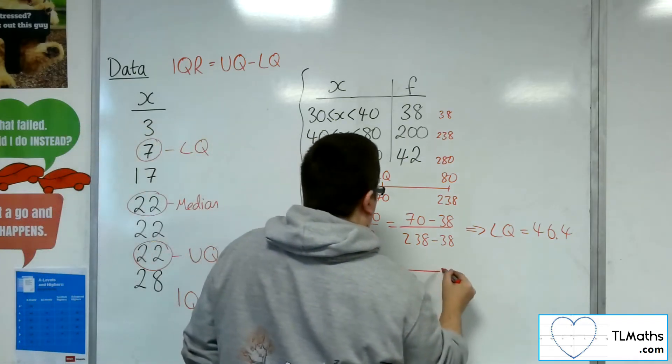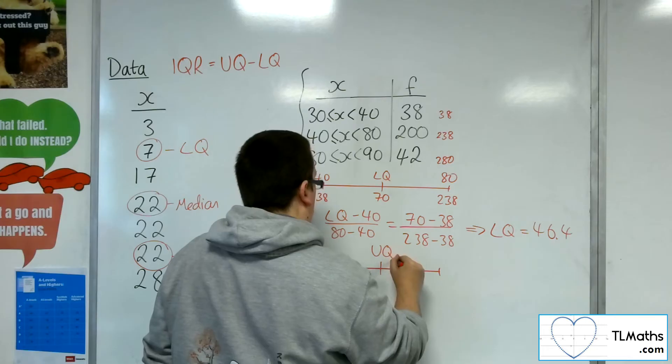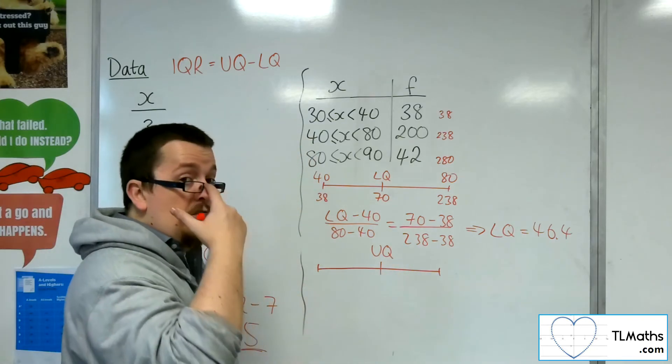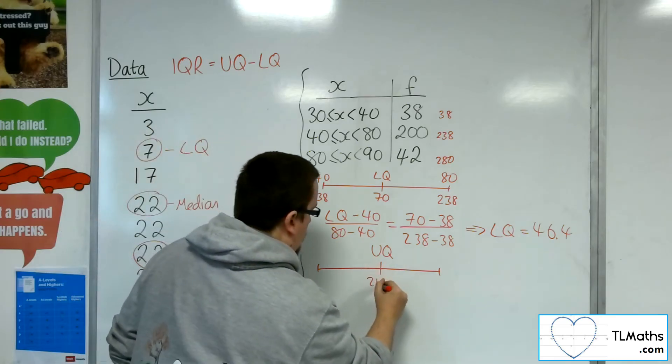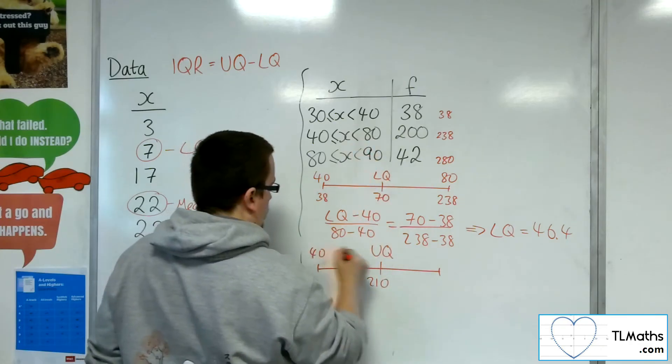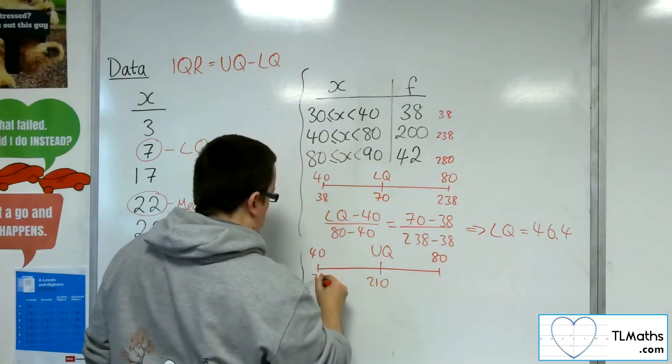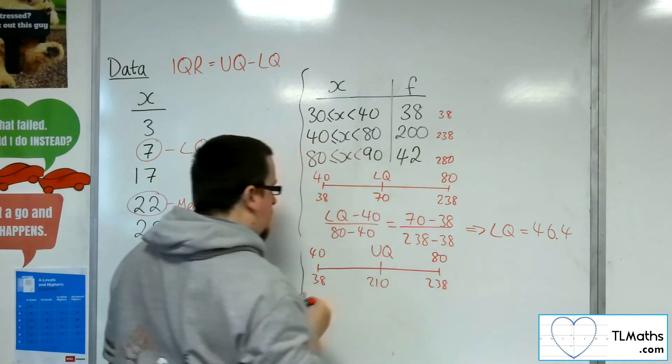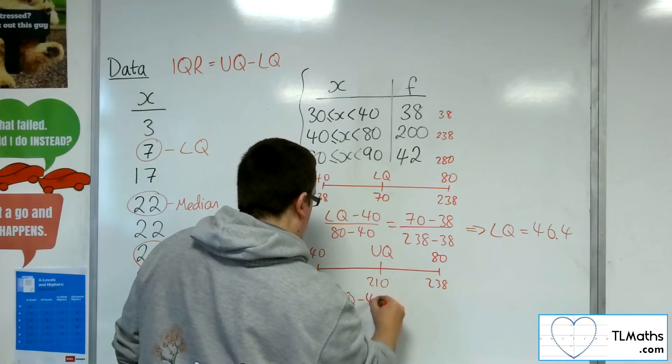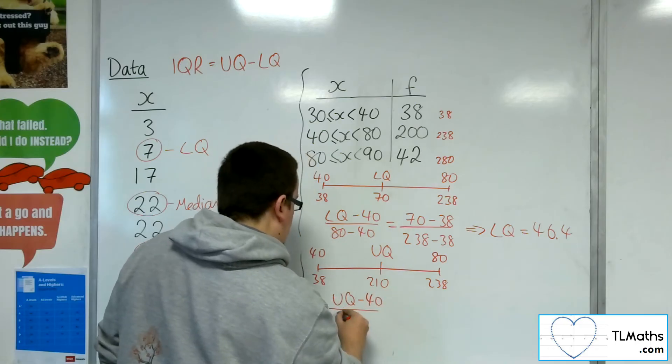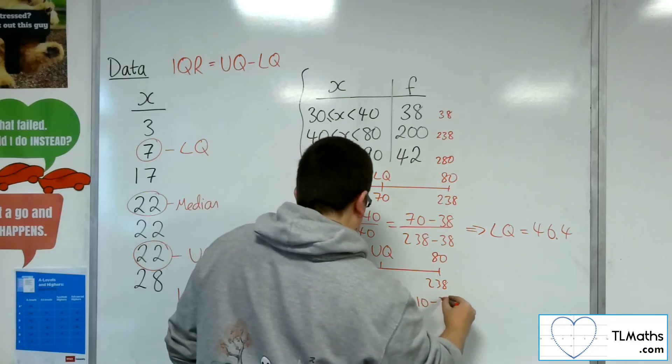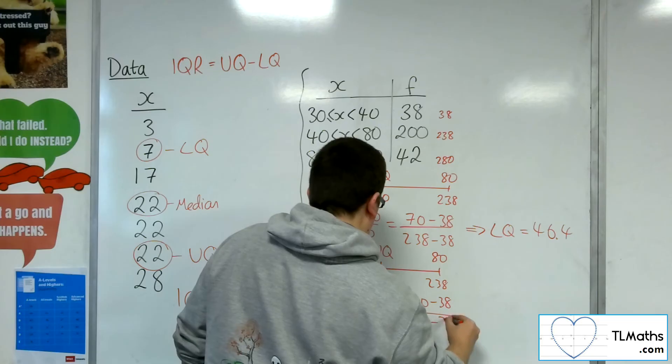Now, the upper quartile, we're going to have to use interpolation again. So there were 280 bits of data, so 3 quarters of that is 210. So it's the 210th position. So that is also in that grouping. So we've gone through 38 and 238 bits of data. So the upper quartile, take away 40, divided by 80 take away 40, is equal to 210 take 38, over 238 take away 38.